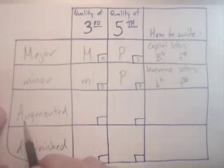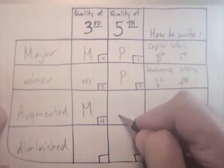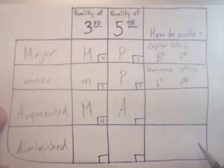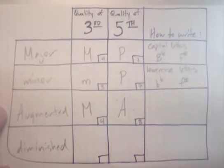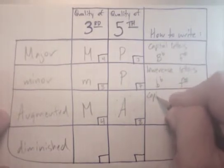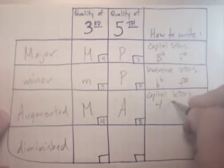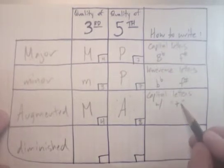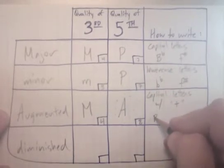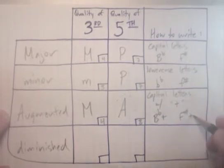Number three in our lineup: augmented triads have major thirds, which are four half steps, and they have augmented fifths—the namesake—which are eight half steps. We write augmented triads in capital letters with a plus sign. You don't need the quotes; I'm just putting it there to indicate that that is what you need. So it would be B flat plus or F sharp plus.